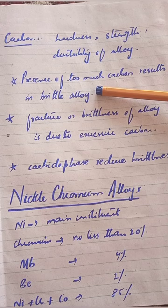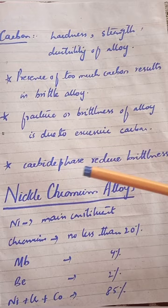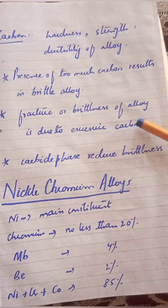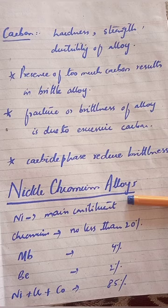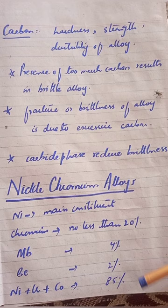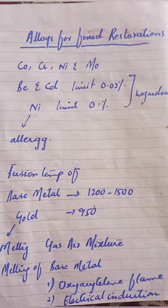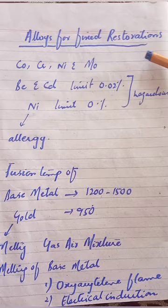If too much carbon is present, one phase — the carbon phase — is brittle, so we need to reduce it. Now for nickel-chromium alloys: the composition is chromium 20%, molybdenum 4%, beryllium 2%, and the combined total should be no less than 85%. These alloys are used for fixed restorations.